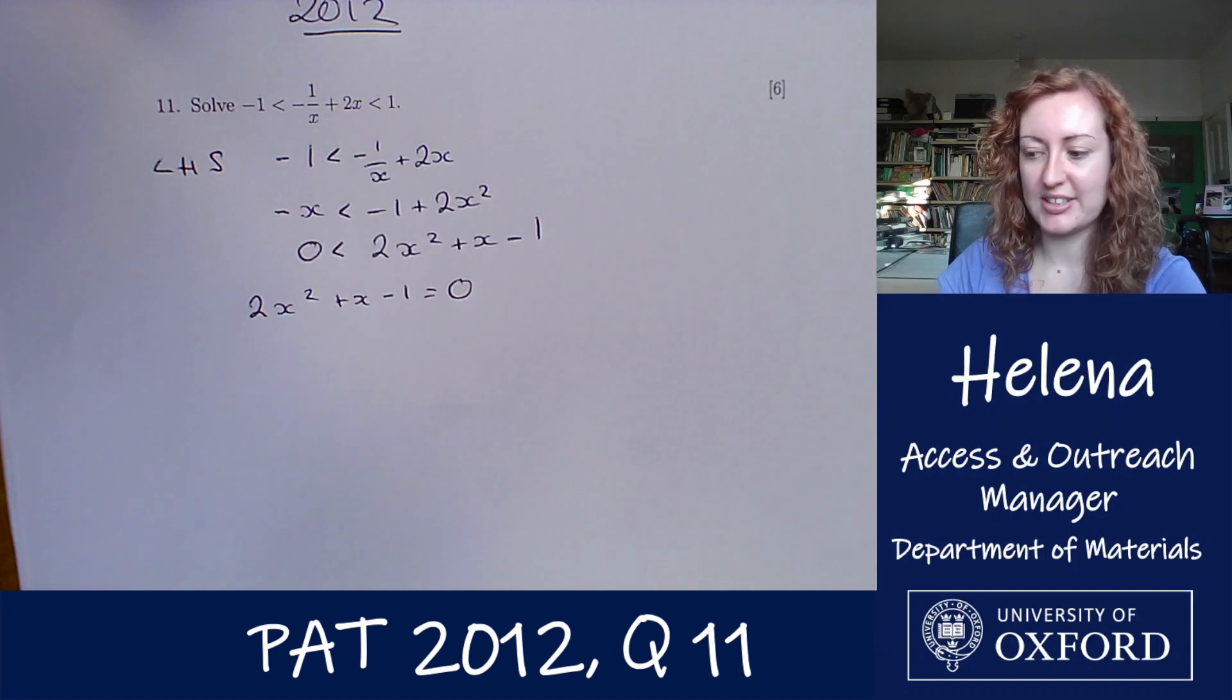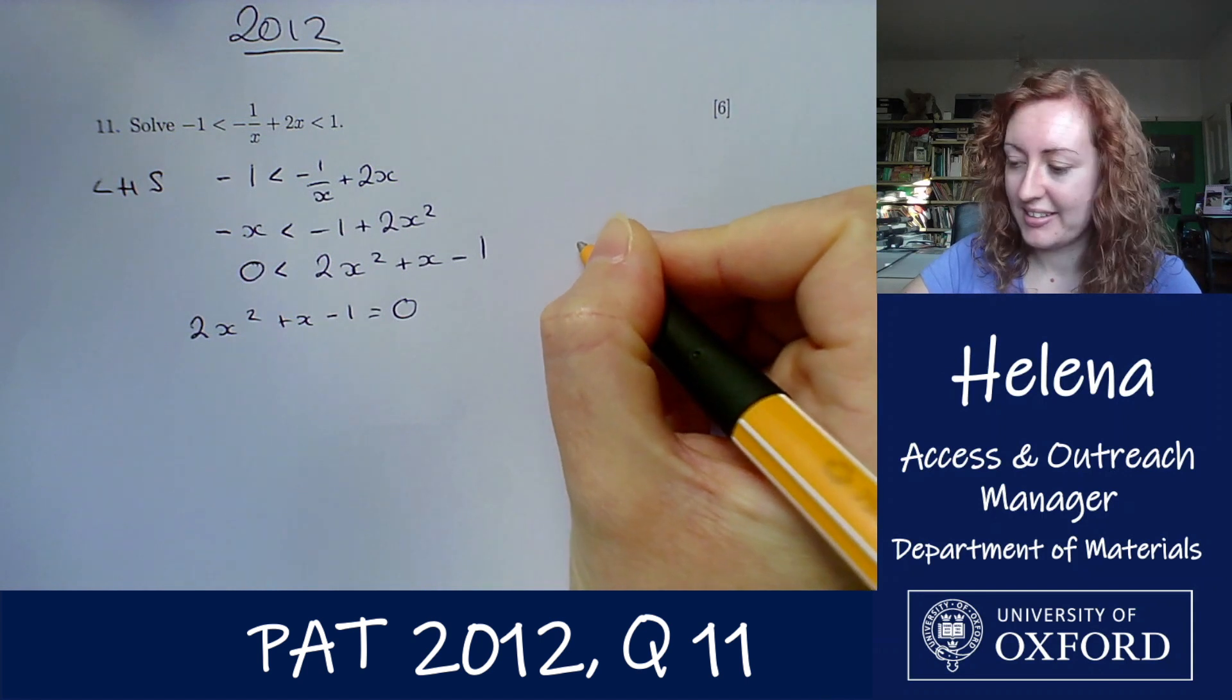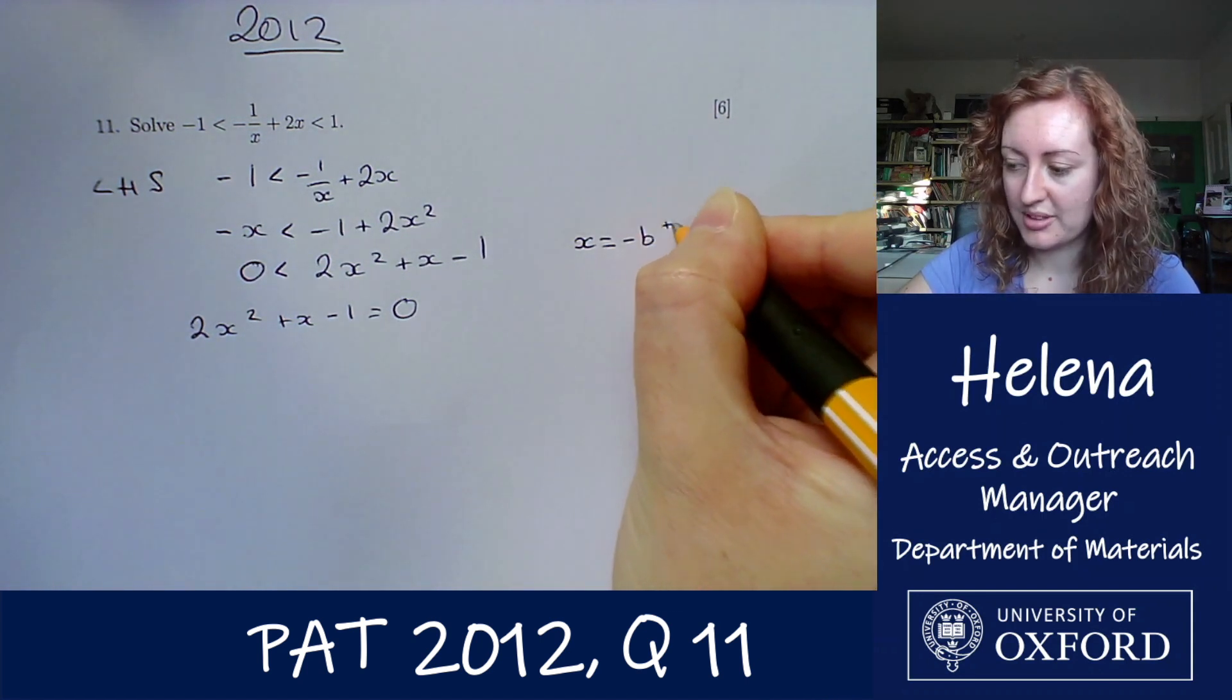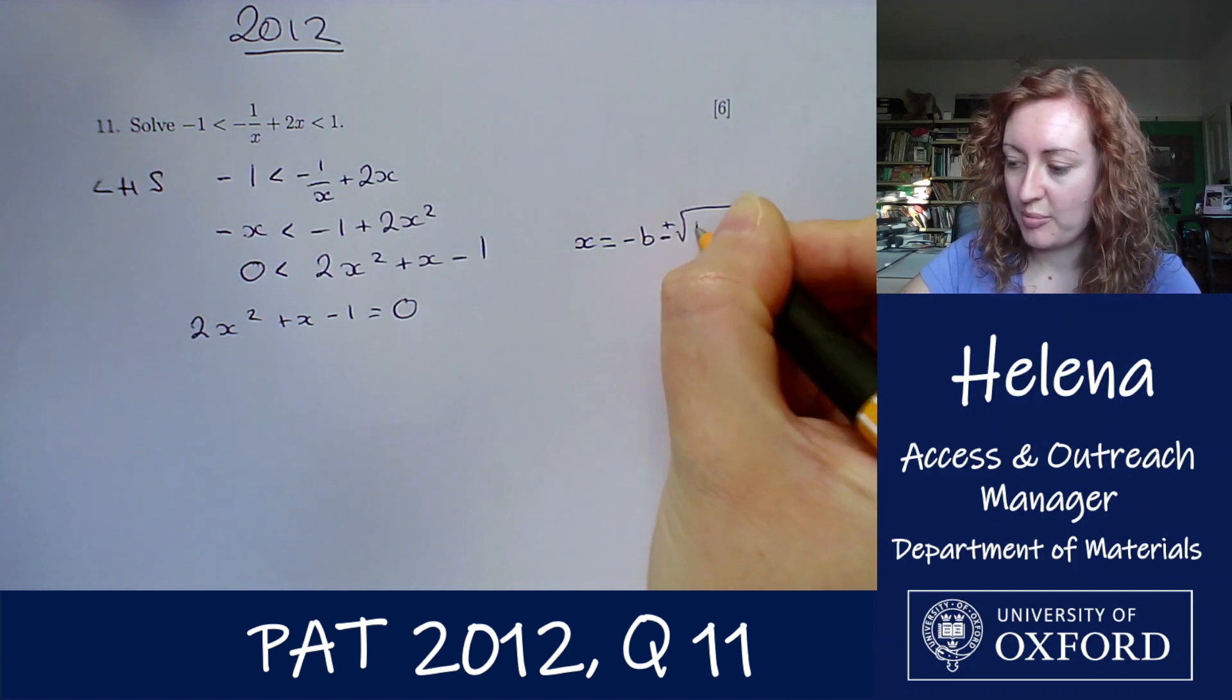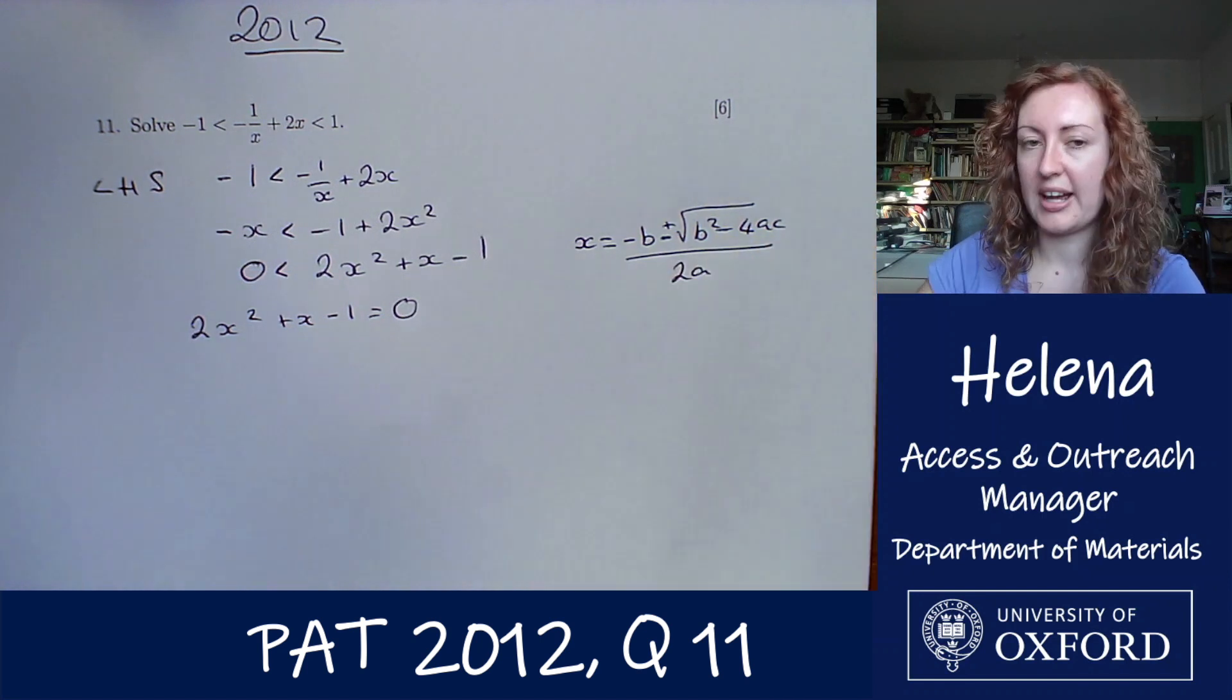To do this we're going to need to use the quadratic formula here. So let's write this up. x equals minus b plus or minus the square root of b squared minus 4ac all over 2a.